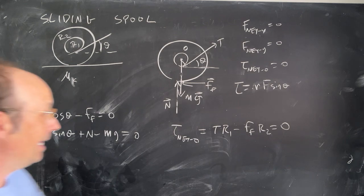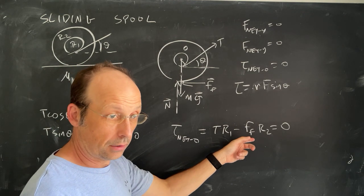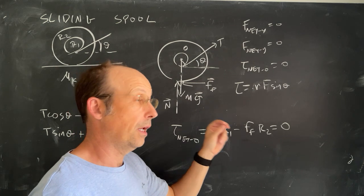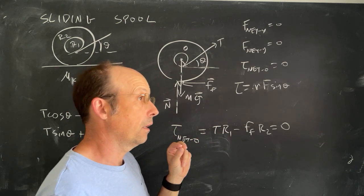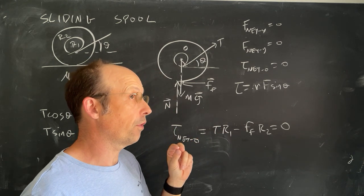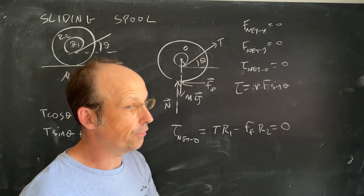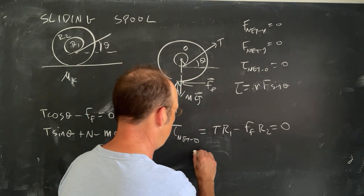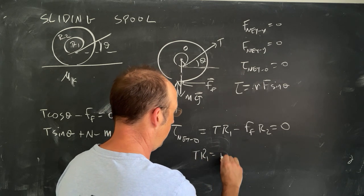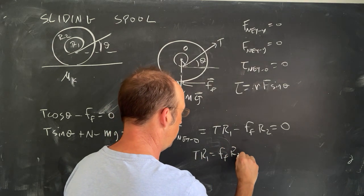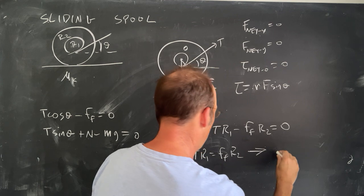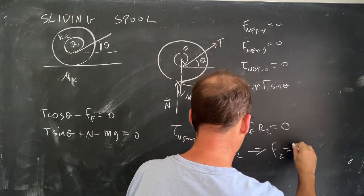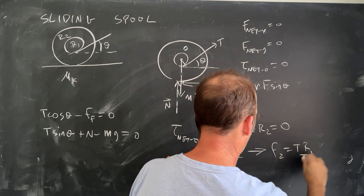So let's take this equation and solve for the frictional force. Now, I wanted to solve for the frictional force using the coefficient of friction, but it turns out we don't need that. If I solve this for friction, I get T R1 equals the frictional force times R2, which gives me the frictional force is equal to T R1 over R2.